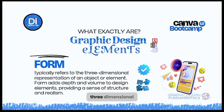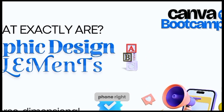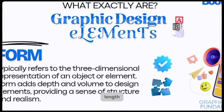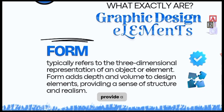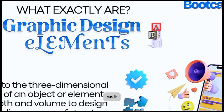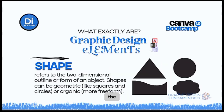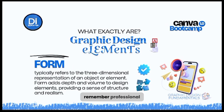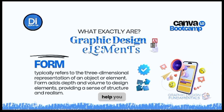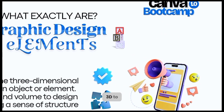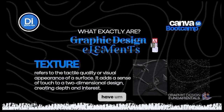Next is form, which is three-dimensional. You can see this blue tick and this phone — they are no longer limited to two sides; they have length, width, and breadth. Form refers to the three-dimensional representation of an object or element. It adds depth and volume to the design, providing a sense of realism. Using just shapes cannot evoke emotions, but form helps communicate realism. Things like mockups use 3D to achieve that.